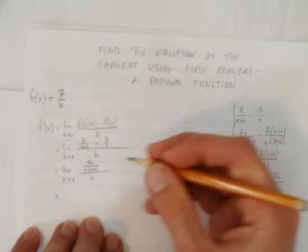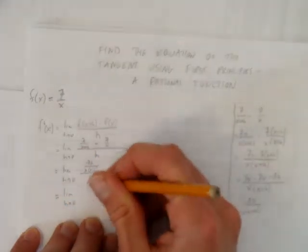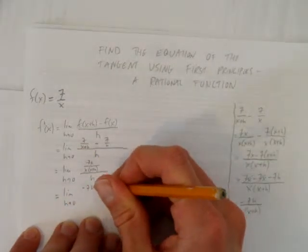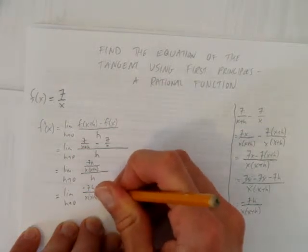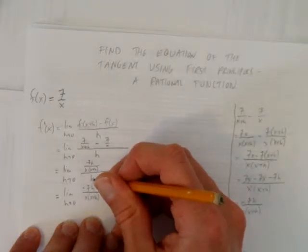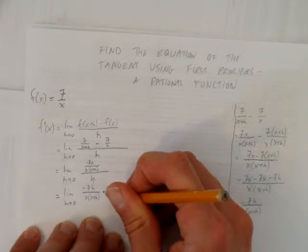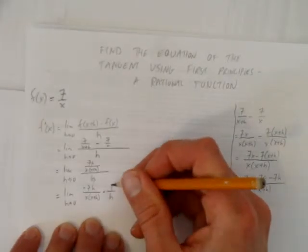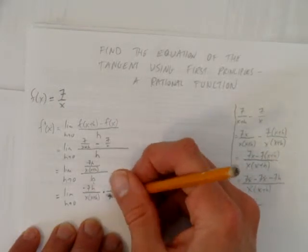So how do we move forward now? Well, the easiest way I know how to show it is to say, look, this is negative 7h over x, x plus h. And then here I was dividing by h, which is the same as h over 1. When you're dividing by a fraction, it's the same as timesing by its flip. And this shows you the h's place.